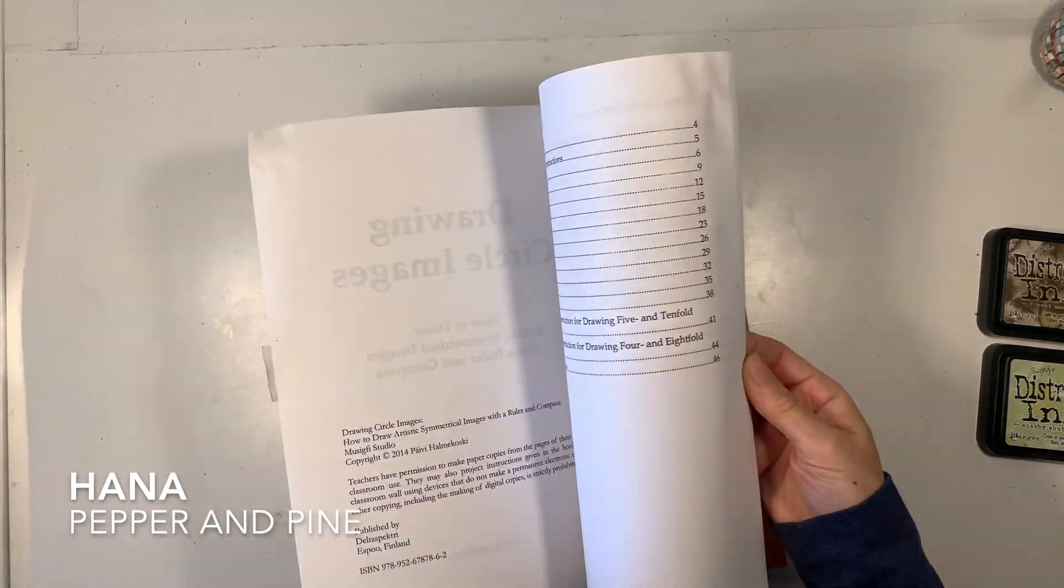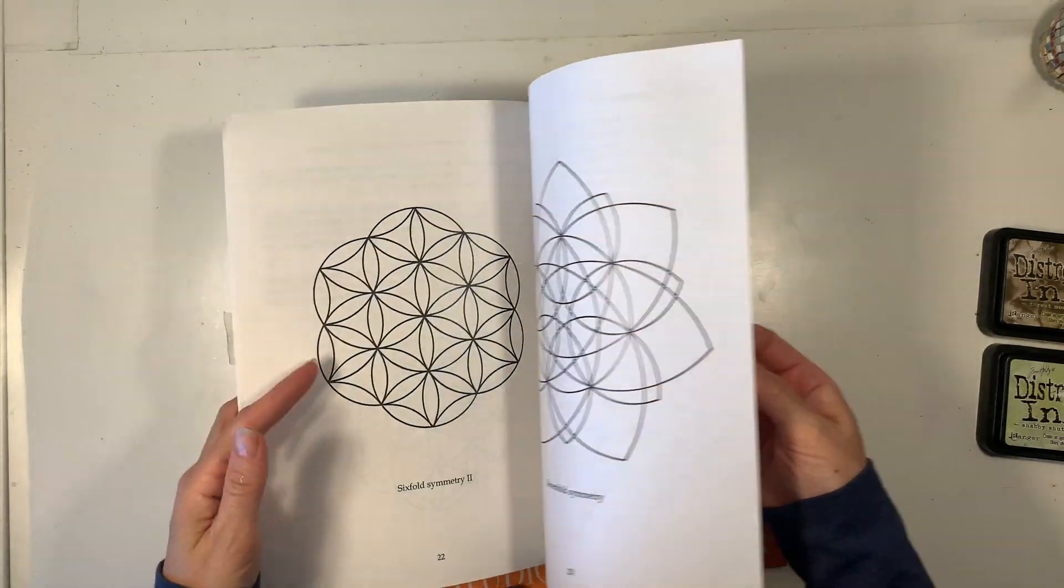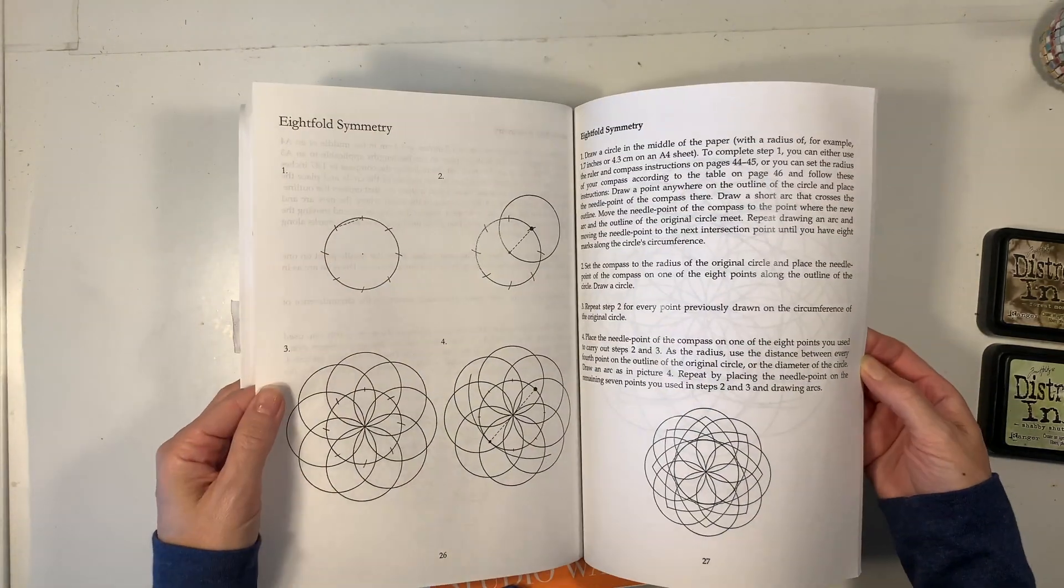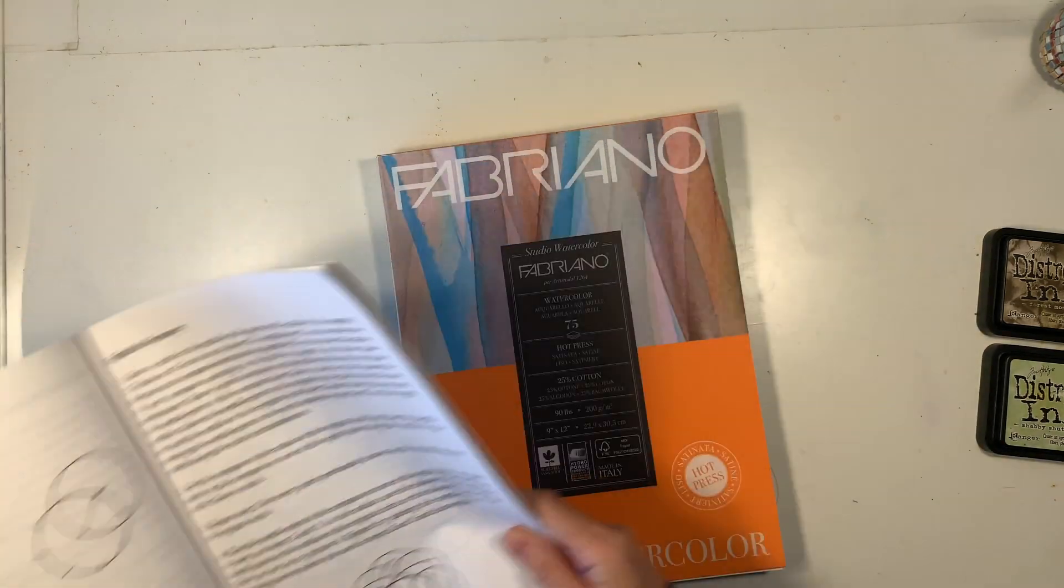Hi everybody, my name is Hannah, this is Pepper and Pine, and I have a geometry tutorial to share with you today. We are in the middle of our Waldorf main lesson block for geometry, and we are using this book called Drawing Circle Images as inspiration for these following lessons.